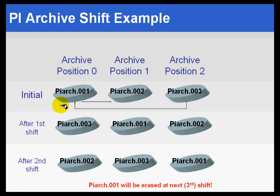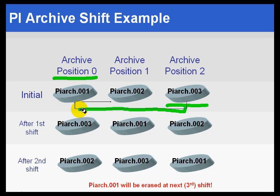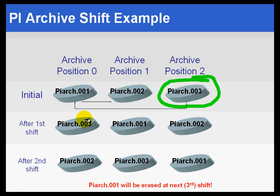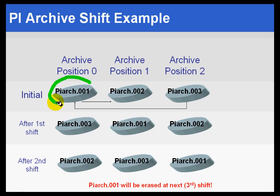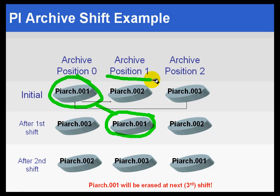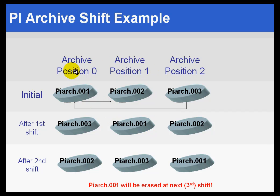So, in this event here, we have position zero, which was the primary archive. We have filled this entirely. So, as of the time of the next shift, we're going to take this highest empty archive and make that the new primary archive. After the first shift, this is what you see. This used to be the highest empty archive — now it becomes the primary archive. And what was PIARCH001 was the primary archive; that's now the archive in position 1.